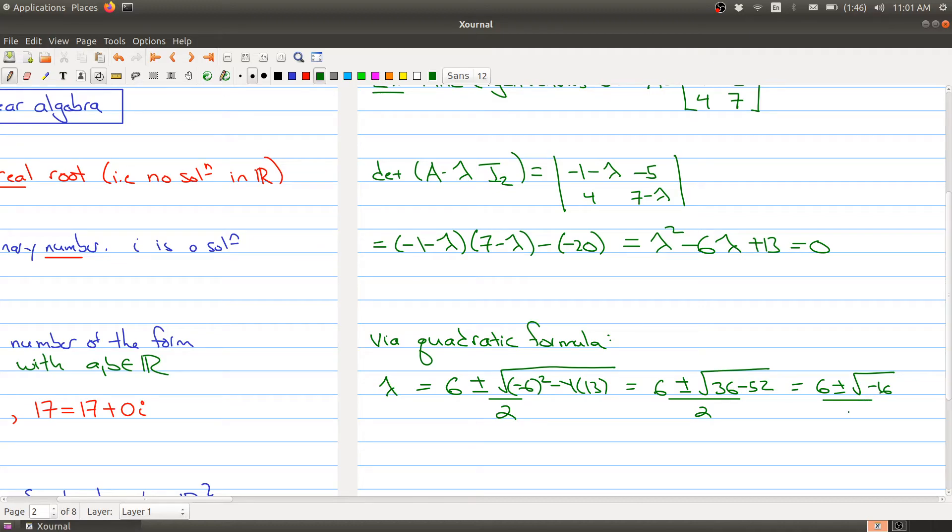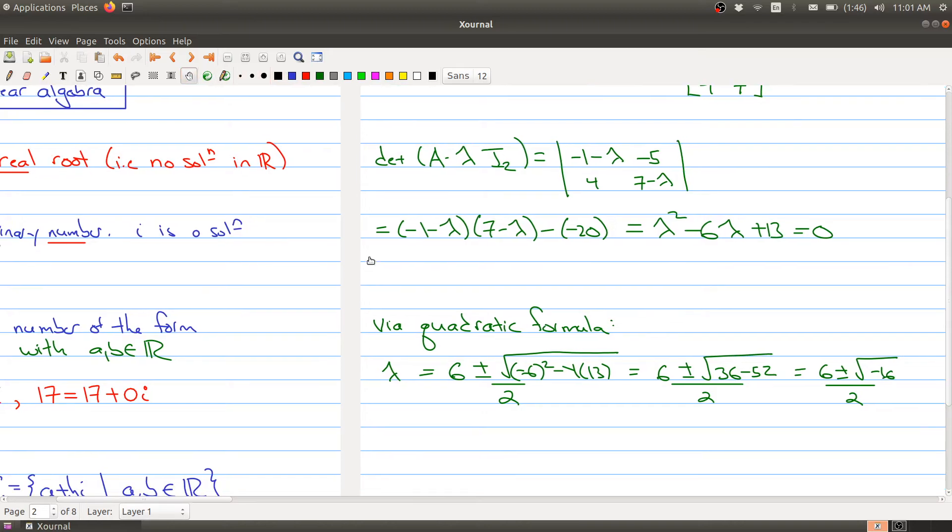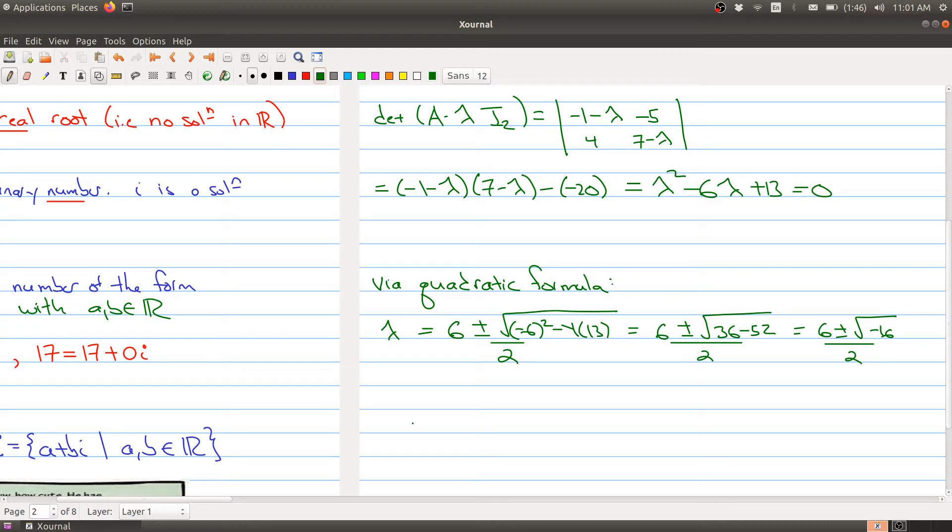Normally in calculus, if you got this far, you would stop and say there's no roots. But now that we're allowing complex numbers, we can actually solve for this. We have 6 plus or minus the square root of 16 times the square root of negative one, all over 2. This gives me 6 plus or minus 4i over 2. Dividing each term by 2, we get 3 plus or minus 2i.